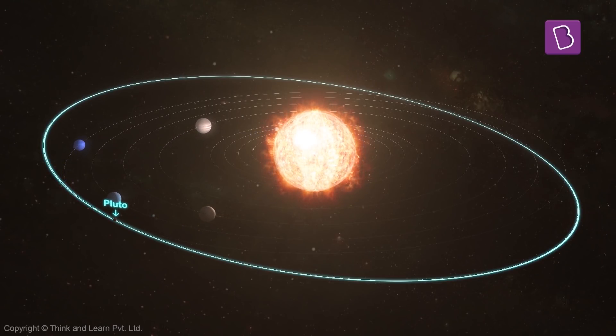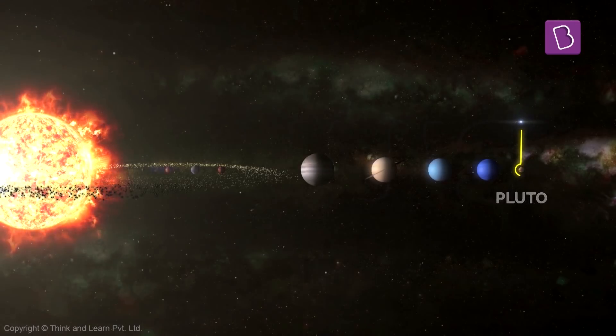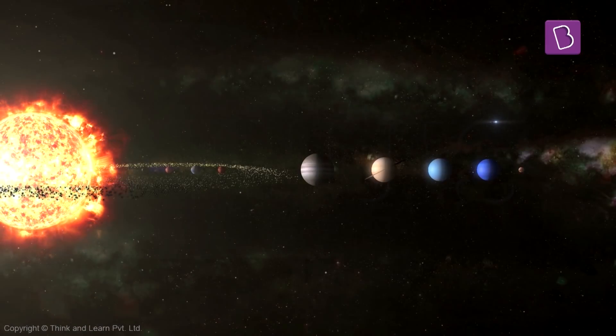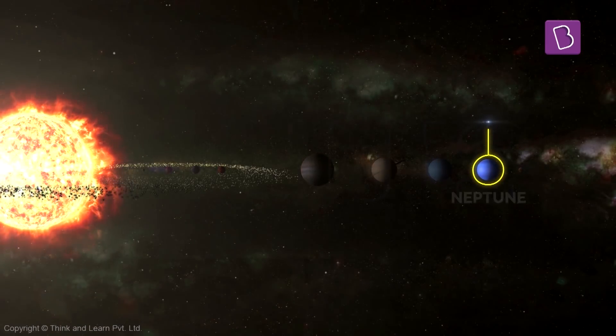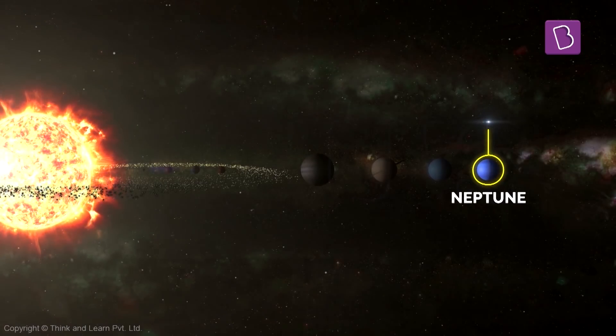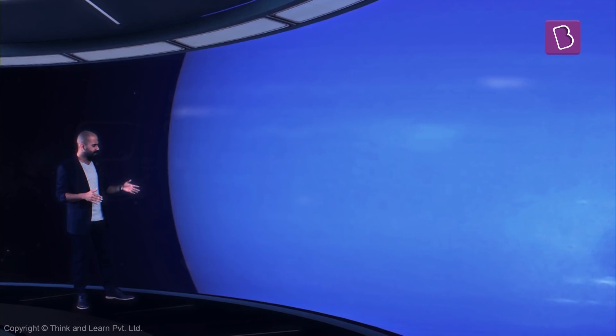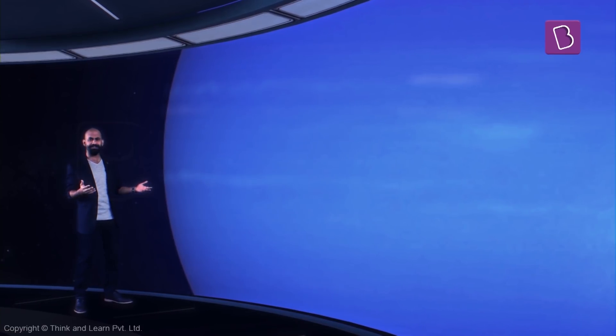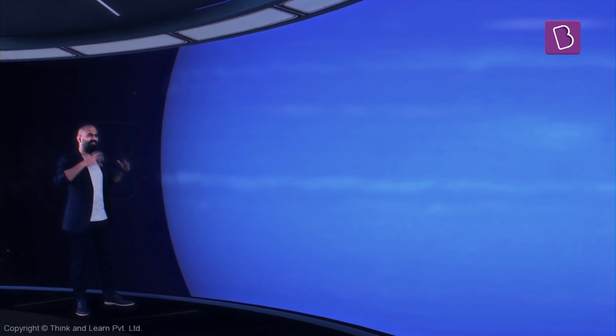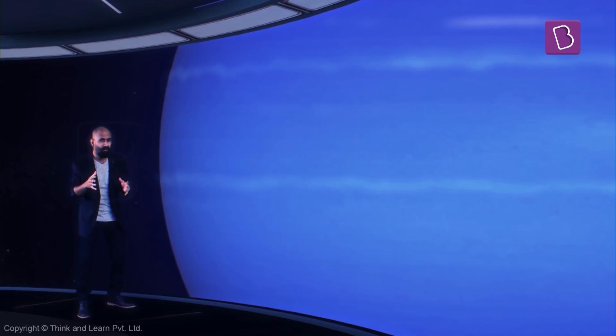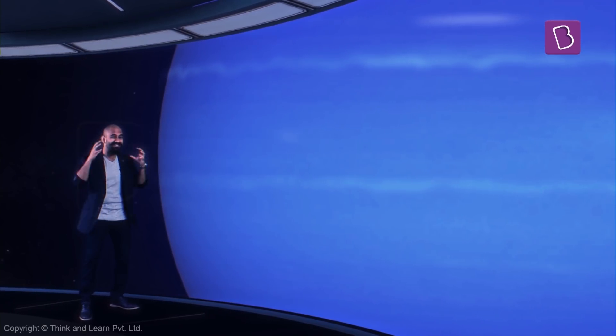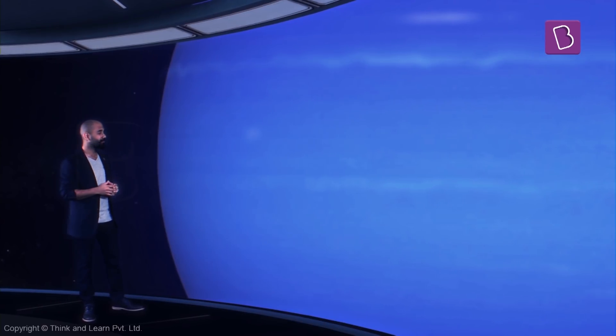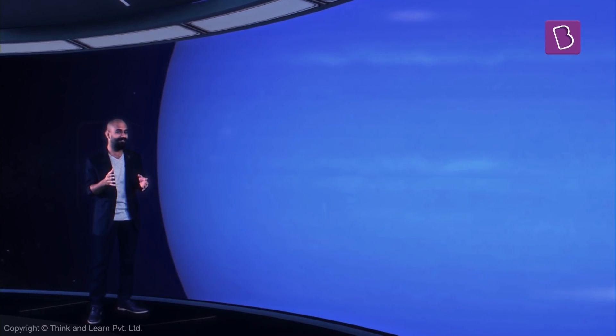Now let's go to Neptune, the last planet from the Sun. Neptune is an ice giant - it's called an ice giant because it's predominantly made of ice and it's huge. It's so big that you can actually fit about 60 Earths into it.